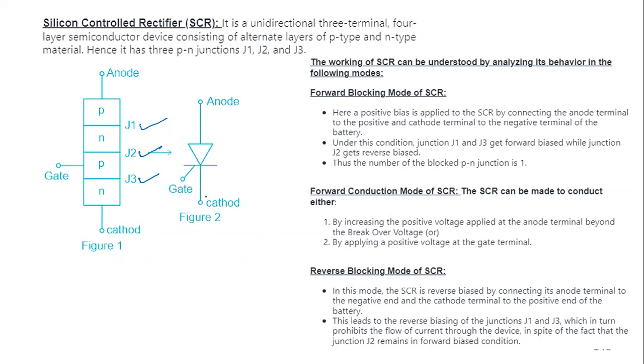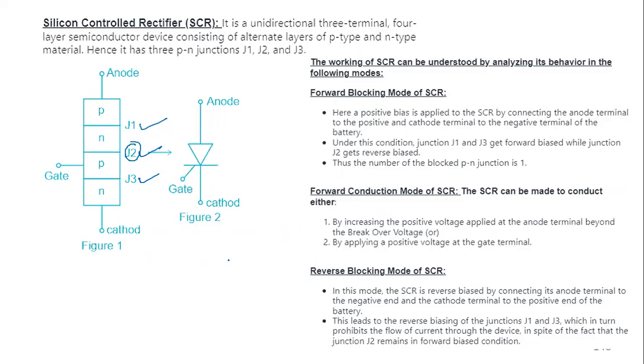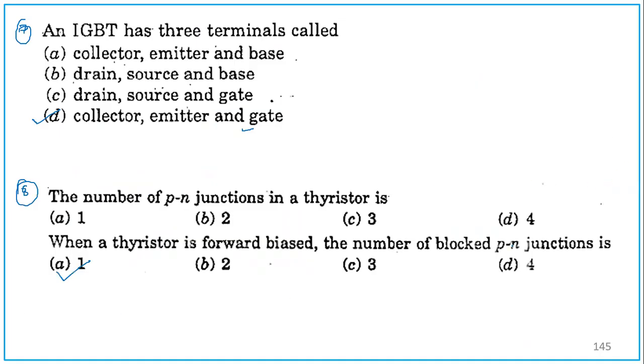We can represent it simply as anode and cathode will be there and this will be the gate terminal. It has different modes of operation. Forward blocking mode is positive bias applied to the SCR by connecting the anode terminal to the positive and cathode terminal to the negative of the battery. Under this condition, junctions J1 and J3 get forward biased while junction J2 gets reverse biased. The number of blocked junctions is 1. Only J2 is blocked. The answer to question number 9, when a thyristor is forward biased, the number of blocked PN junctions is 1.